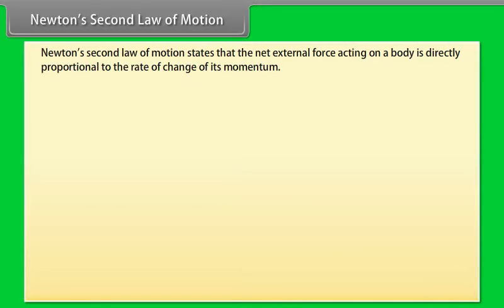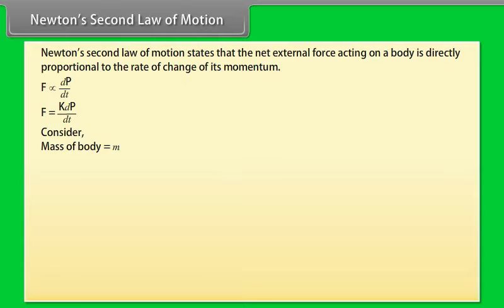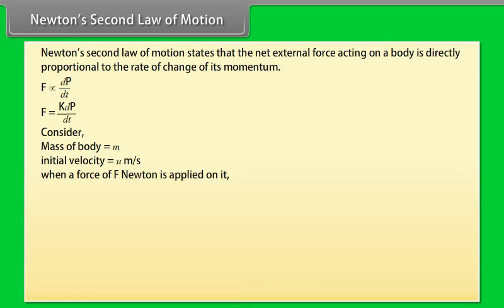Newton's Second Law of Motion states that the net external force acting on a body is directly proportional to the rate of change of its momentum. Consider a body of mass m initially moving with a velocity of u m/s. When a force of F Newtons is applied on it, its velocity becomes v m/s after a time of t seconds.